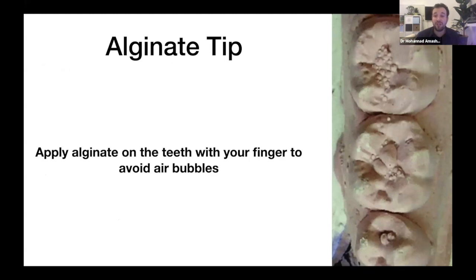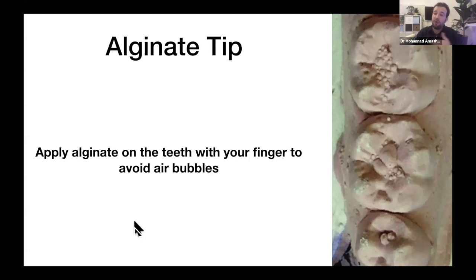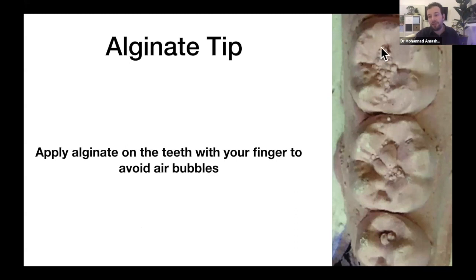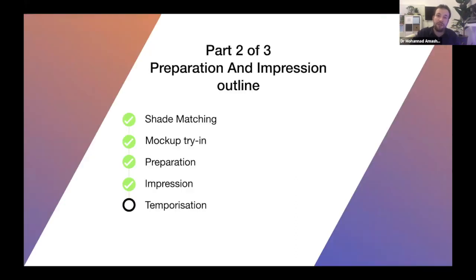One last point about impressions: alginate. An important tip — mix your alginate and physically place it with your finger onto the tooth surfaces, making sure to press into the sulcus and hard-to-reach areas. Air gets trapped in these areas if you place the tray immediately without doing this. By physically placing the material first, you ensure those areas are captured, giving you better occlusion records for your final restorations — whether single tooth or full mouth.